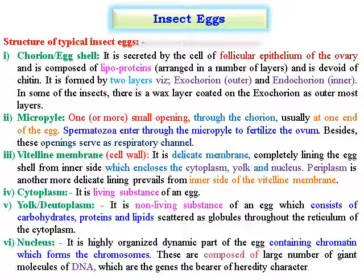The structure of a typical insect egg has different sub-parts. The chorion is the egg shell; it is secreted by cells of the follicular epithelium of the ovary and is composed of lipoproteins arranged in a number of layers and is devoid of chitin. It is formed by two layers: the exochorion, which is the outer structure, and the endochorion, which is the inner structure. In some insects there is a wax layer coated on the exochorion as the outermost layer.